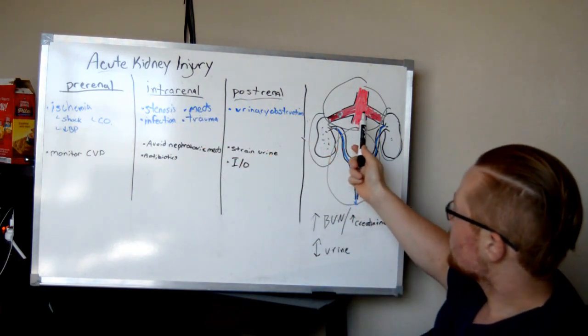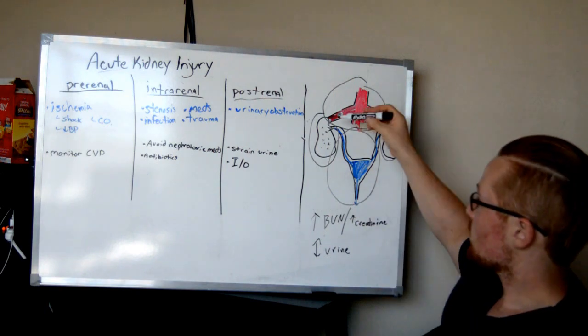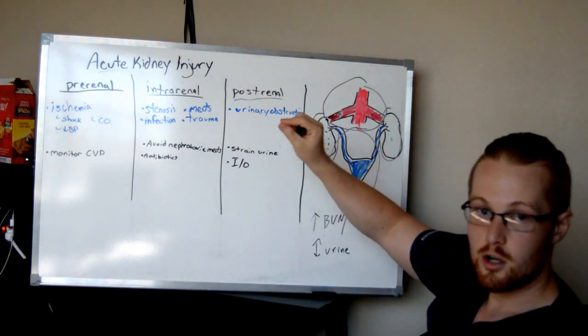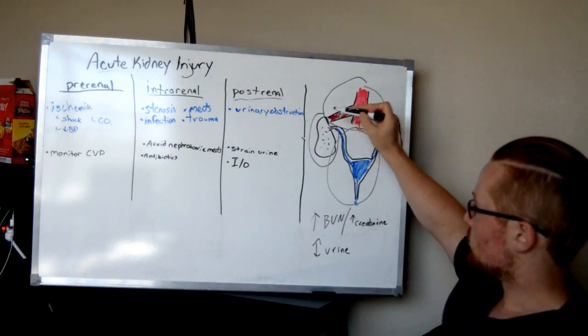Now, I told you earlier, prerenal has to do with ischemia. Well, stenosis is another form of ischemia. That is where the artery itself, right where it connects to the kidney, is narrowed. And they go ahead and categorize that as intrarenal because it has to do with the kidney itself.